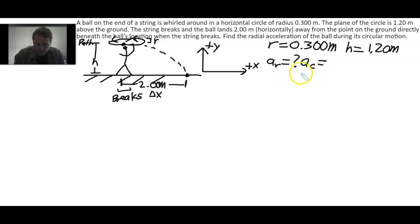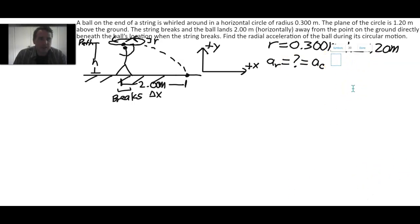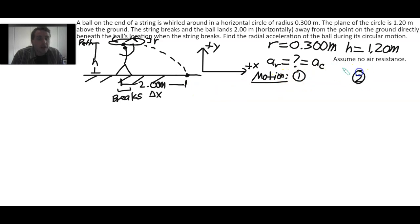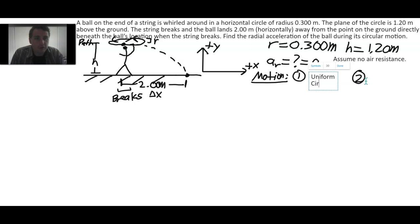The radial acceleration is the same thing as the centripetal acceleration. Let's think about how we're going to manage this problem. Because it's not mentioned otherwise, and for simplicity, assume no air resistance. With no air resistance, this is a projectile problem for the second half. The motion can be thought of in two segments: segment one is uniform circular motion, and segment two is projectile.